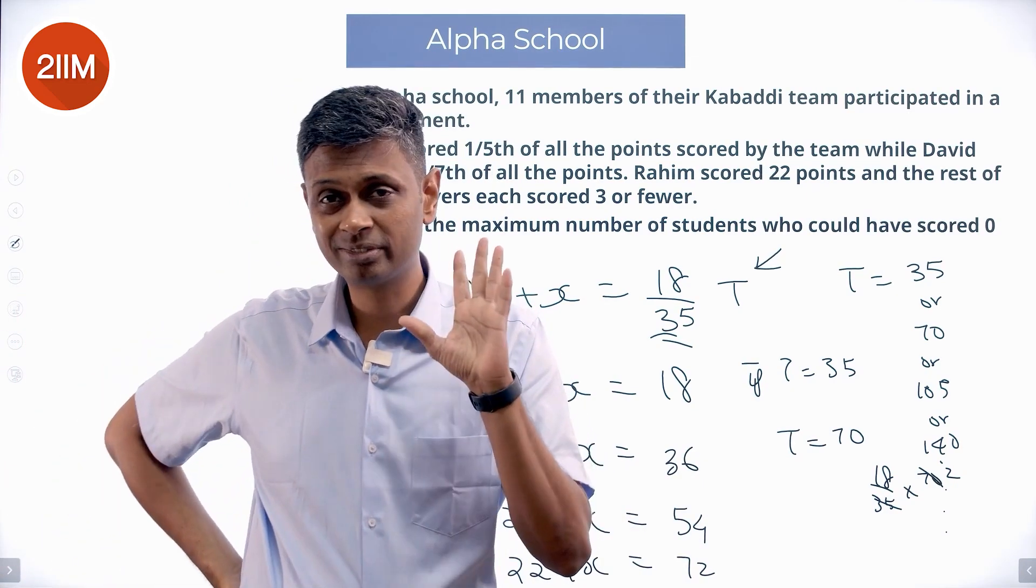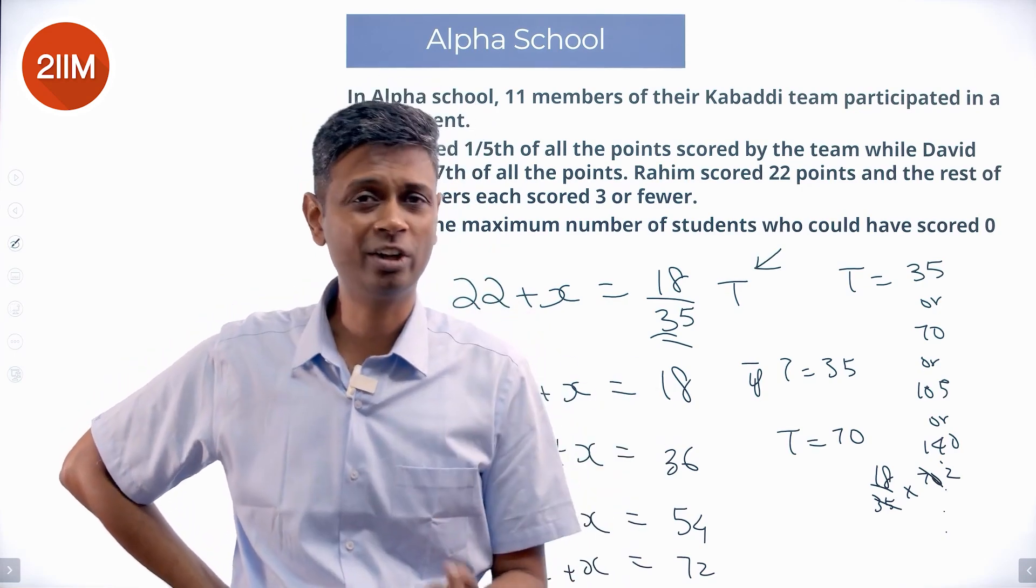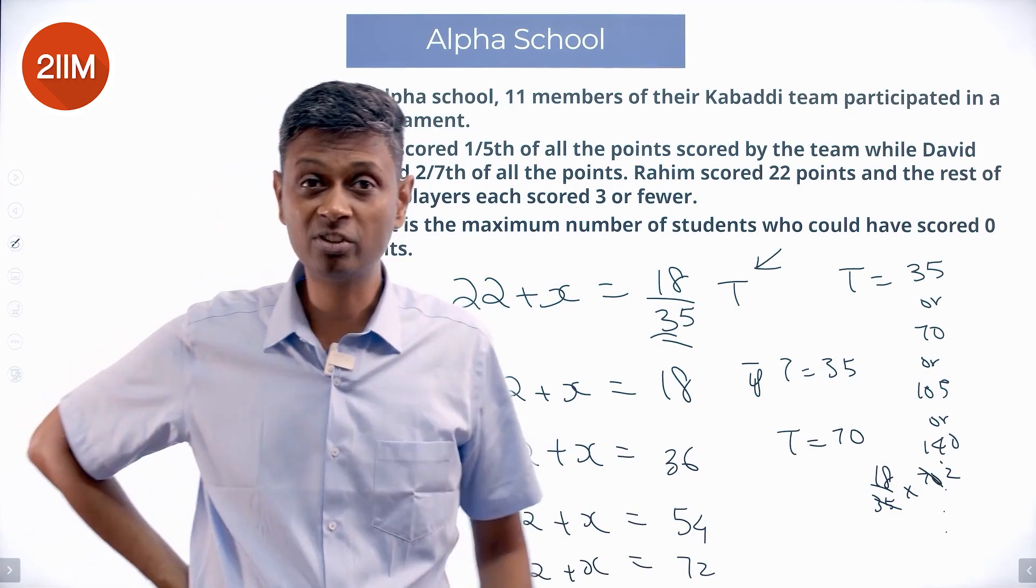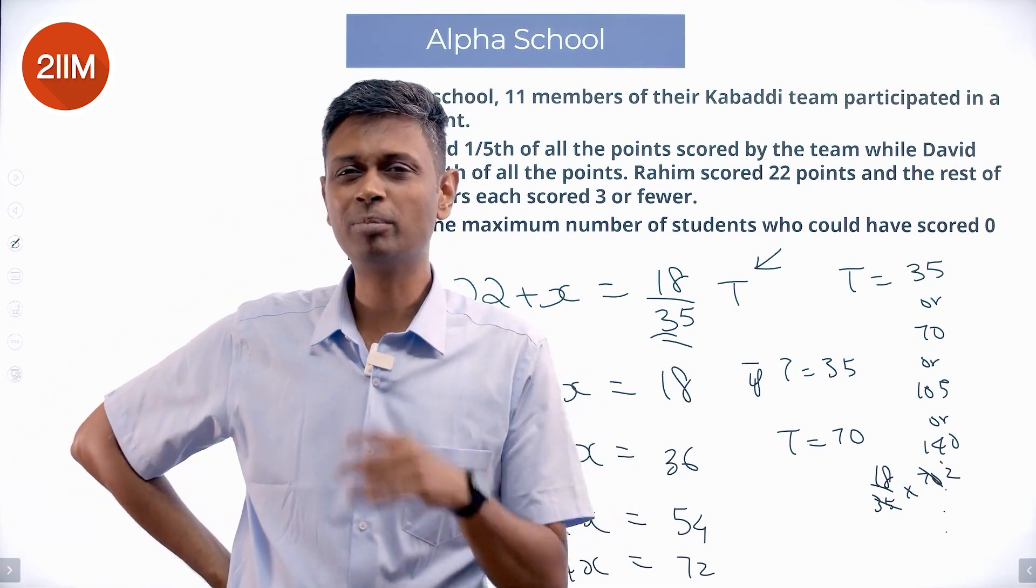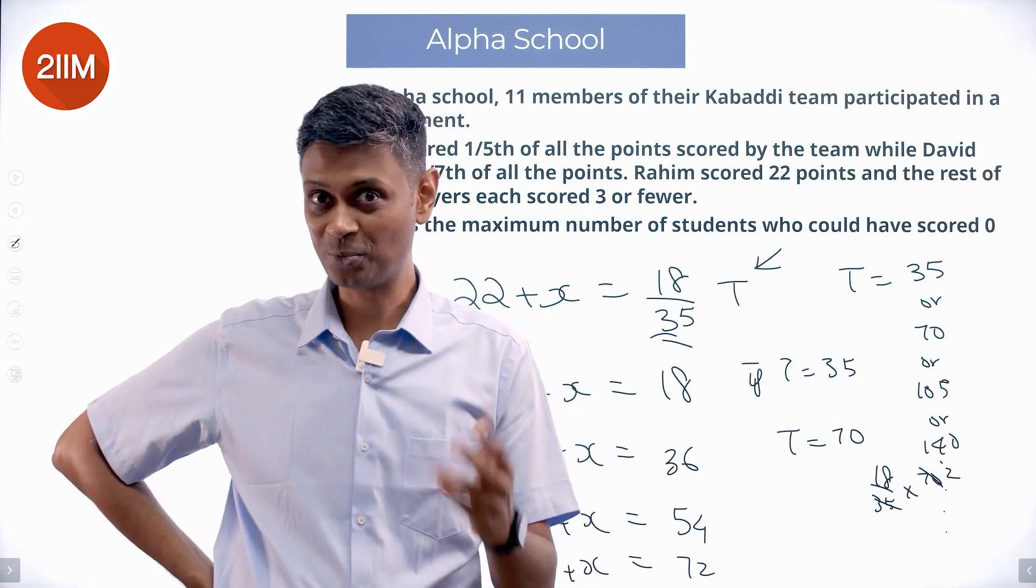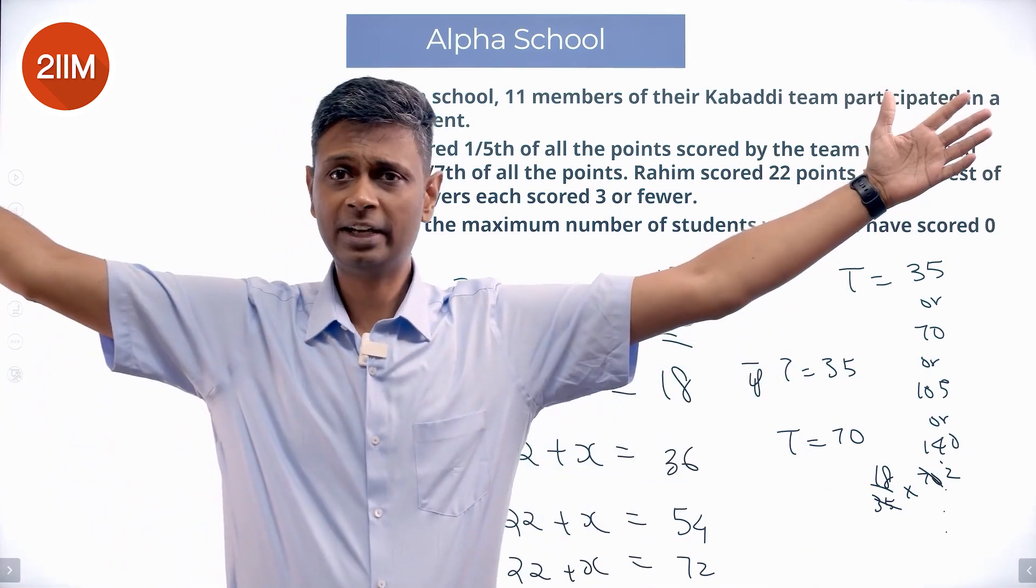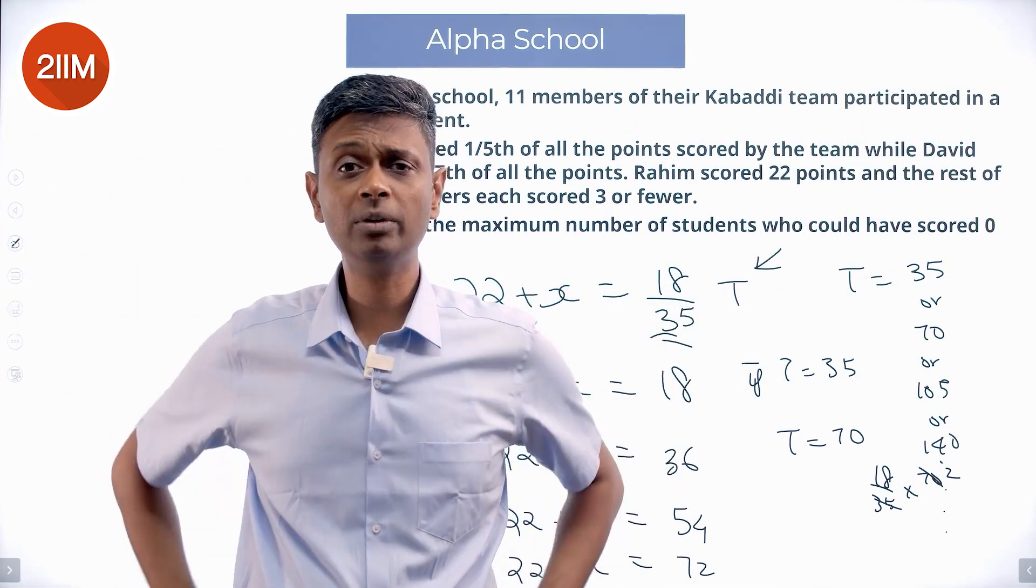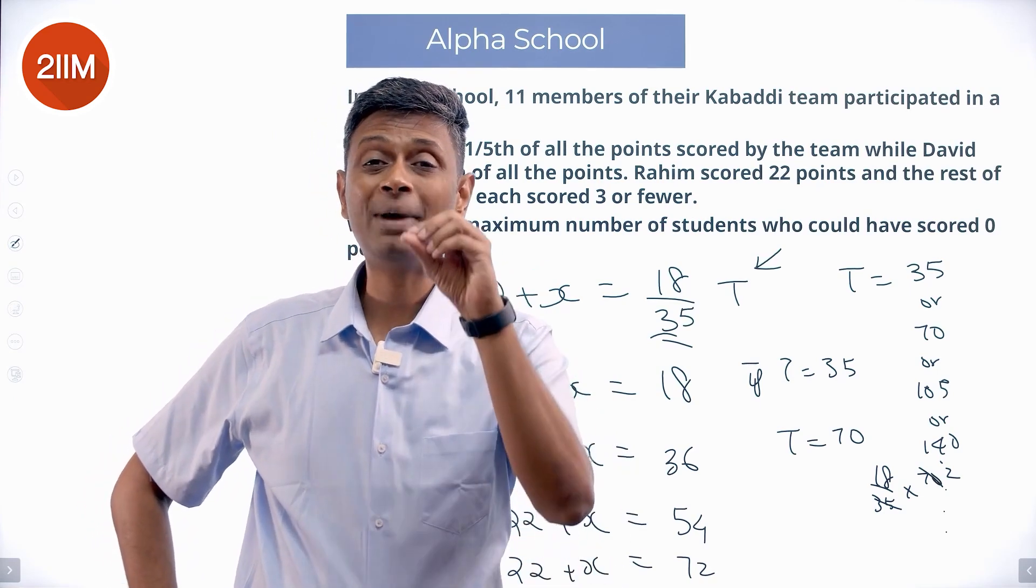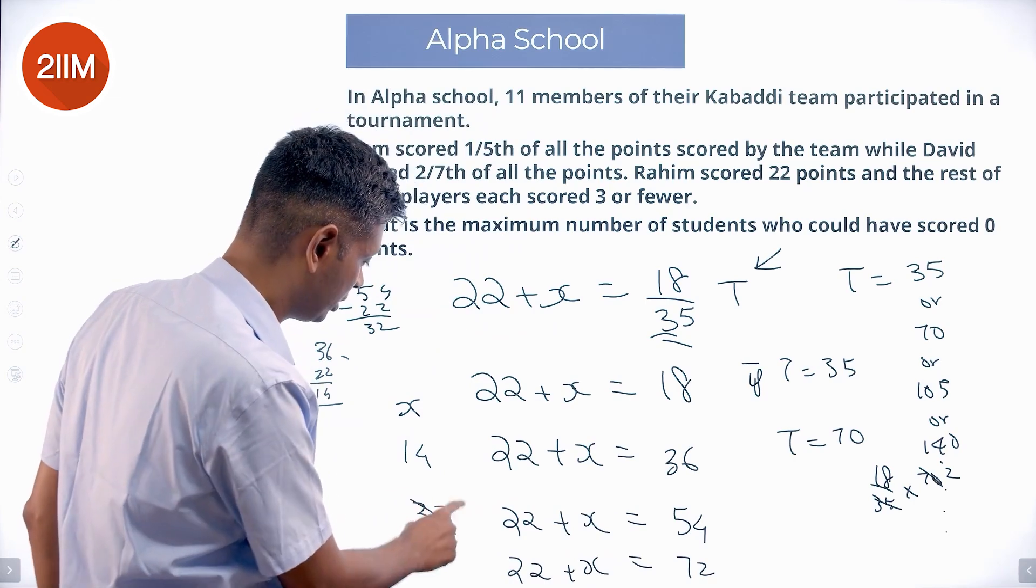But these 8 people, they have all got each of them have got 3 or lesser. I won't say they are useless. Maybe he is a defender. If all of them get 3 points, the maximum they can get. If all of them get 0, they will all get 0 together. If all of them get 3 points, the total maximum can be 8 into 3, 24.